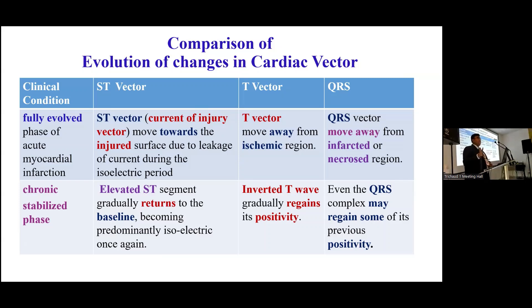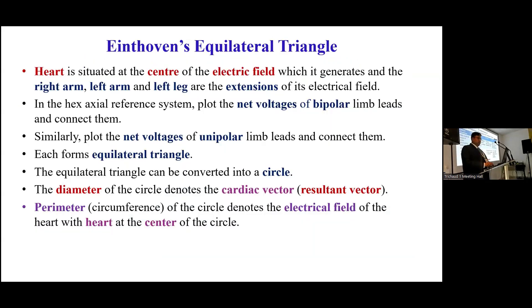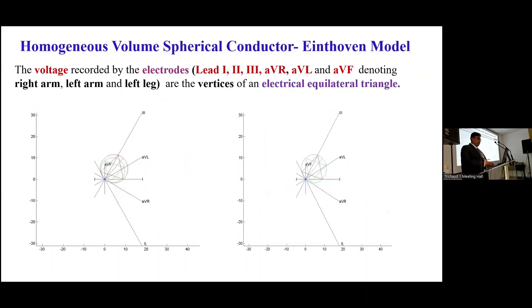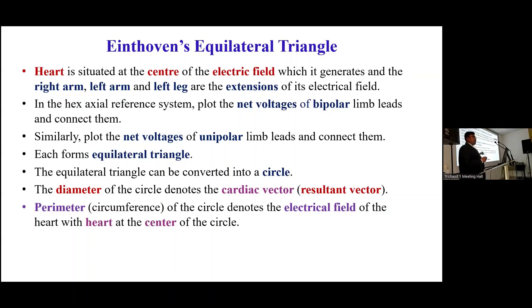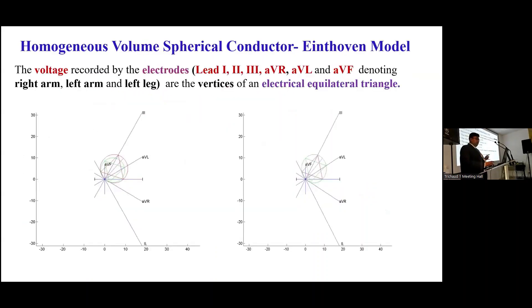To understand most common cardiac diseases and the formation of ECG waveforms, we simply apply the Cardiac Vector Theory. If you understand the cardiac theory, it is very easy to identify the formation of the waves. The equalized triangle model: heart is situated at the center of the electrical field, and the right arm, left arm, and left leg are the extensions of the electric field — initially proposed by Einthoven. Using the X-axis reference system, by plotting the net voltages of bipolar limb leads and then the net voltages in the X-axis frontal system, each will form equilateral triangles, which can then be converted to circles.